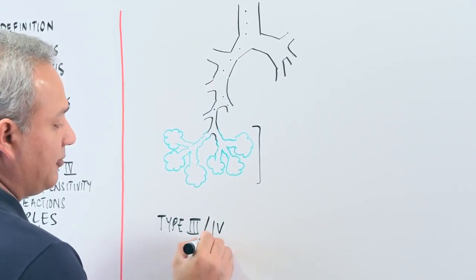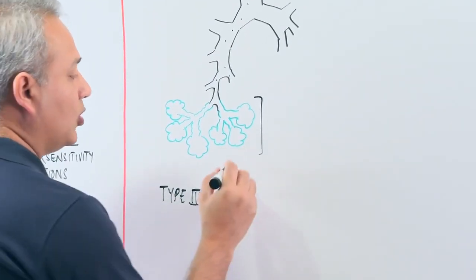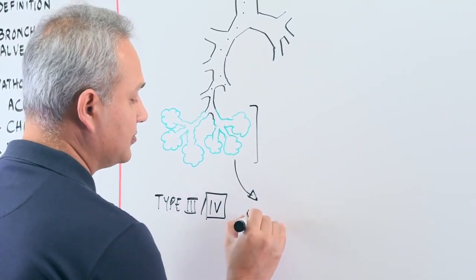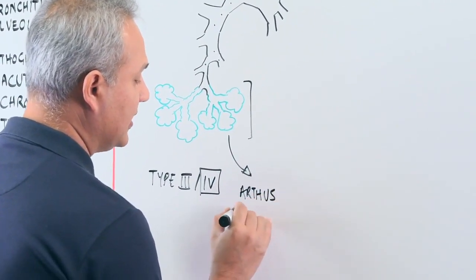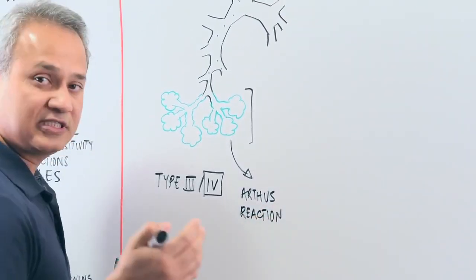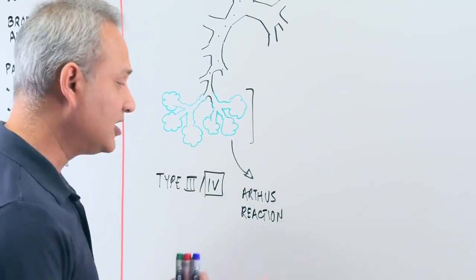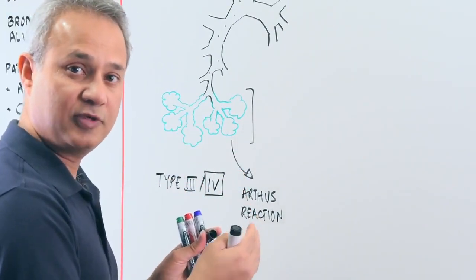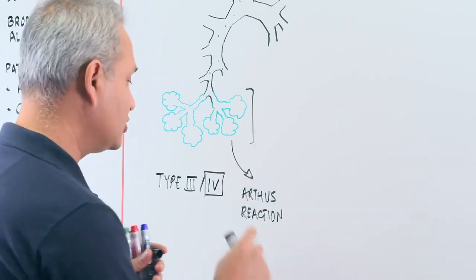Let's deal with type 4 first. What will happen is we have to look at Arthus reaction. Remember type 4 is serum sickness and Arthus reaction. Arthus reaction is the localized inflammatory response to some allergen. So let's look at that.